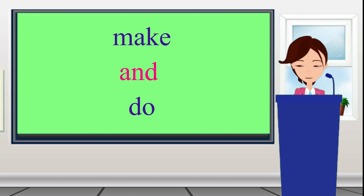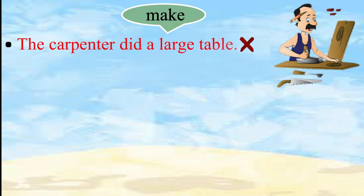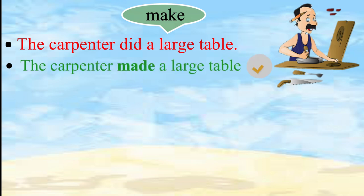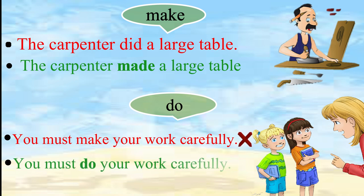It would be wrong to say 'The carpenter did a large table.' The correct sentence is 'The carpenter made a large table.' Similarly, if we say 'You must make your work carefully,' this is incorrect. The correct sentence is 'You must do your work carefully.'